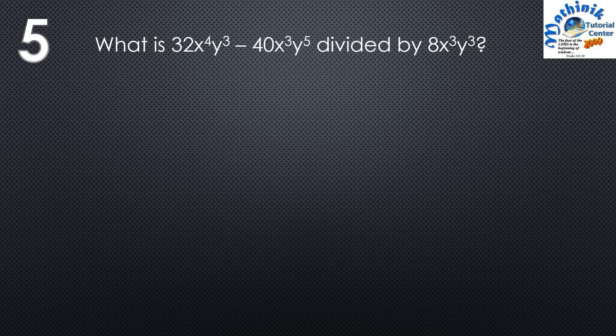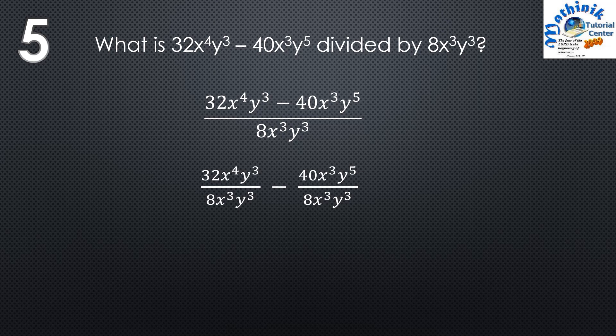Question number 5: What is 32x to the 4th power y cube minus 40x cube y to the 5th power, divided by 8x cube y cube? We rewrite this as the difference of two fractions. 32x to the 4th y cube divided by 8x cube y cube: 32 divided by 8 is 4, x to the 4th over x cube is x, y cube over y cube is 1. Then 40x cube y to the 5th over 8x cube y cube: 40 over 8 is 5, x cube over x cube is 1, y to the 5th over y cube is y squared. So the answer is 4x minus 5y squared.